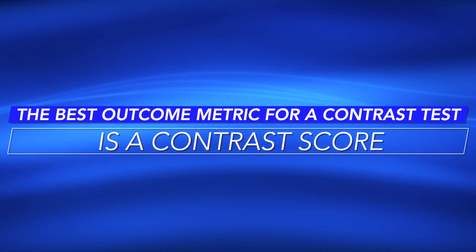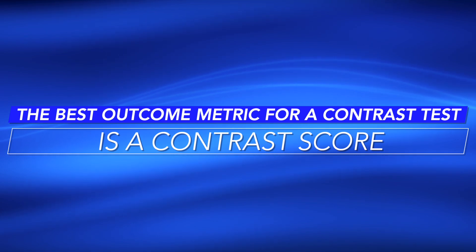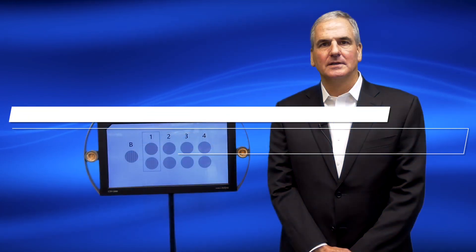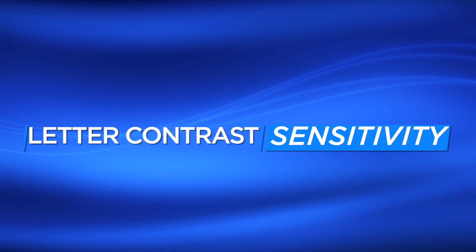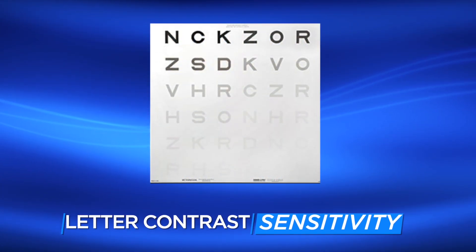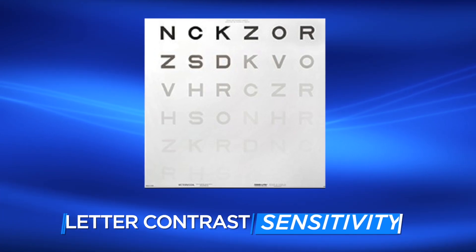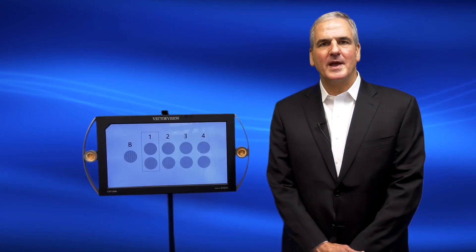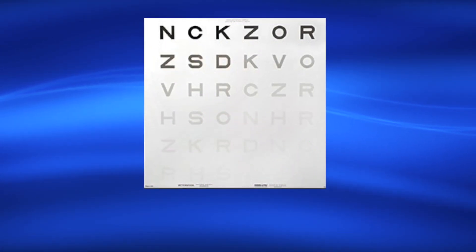Finally, low contrast acuity provides an outcome metric of an acuity score. The best way to measure vision is through a contrast test that measures contrast levels and provides a contrast score. The second type of test is called letter contrast sensitivity. This type of test presents the same size letter, and different groups of letters are presented at different contrast levels. During the test, the patient is asked to read across the rows as the contrast of the letters falls, and the patient is asked to identify the letters.